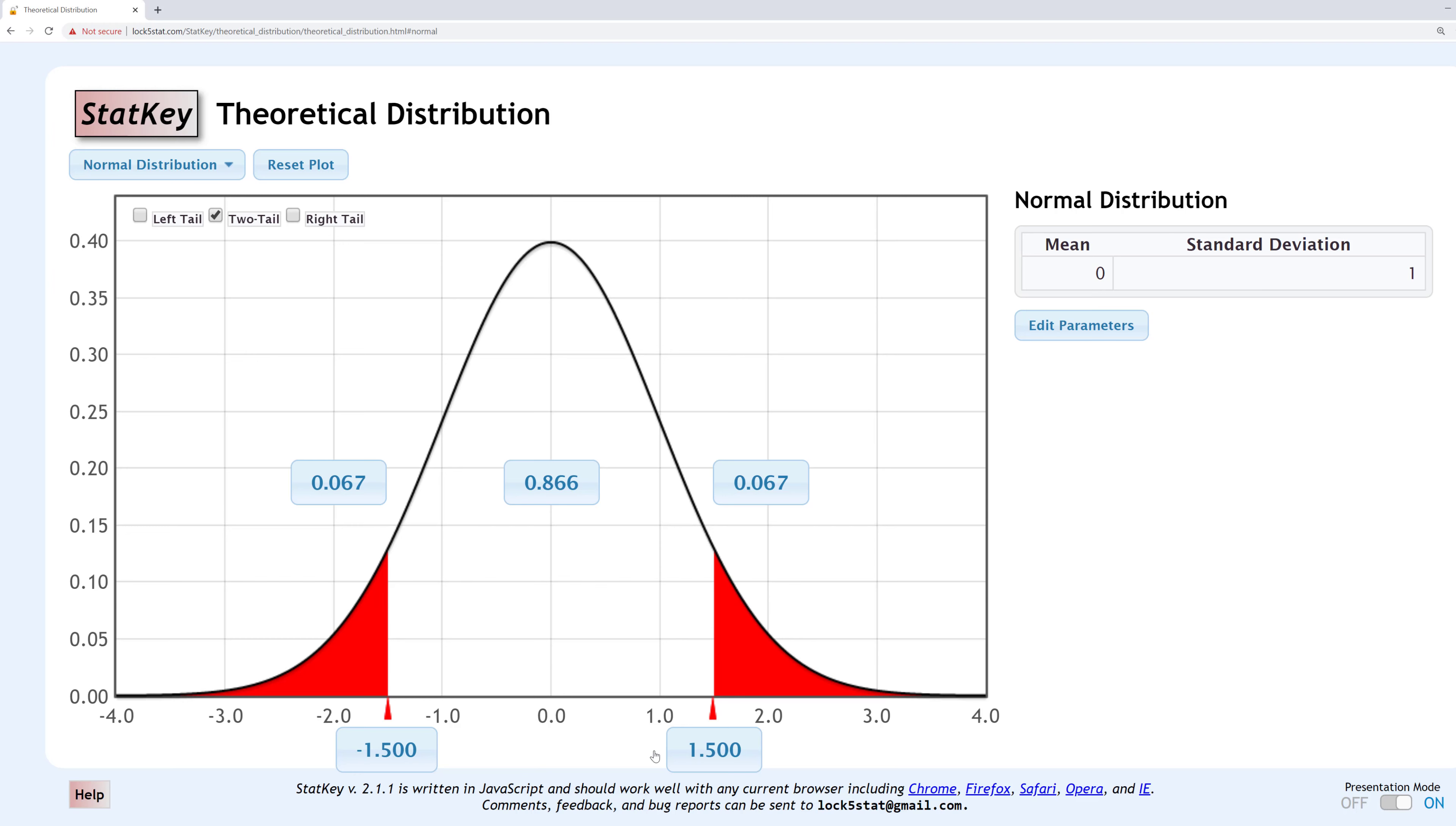In the first three examples, we were given Z-scores and we were looking for the proportion. We can also go in the opposite direction. For example, find the Z-score that separates the top 5% from the bottom 95%. We could select left tail or right tail here because we know that there's 5% in the right tail and 95% in the left tail. I'll go ahead and check right tail.